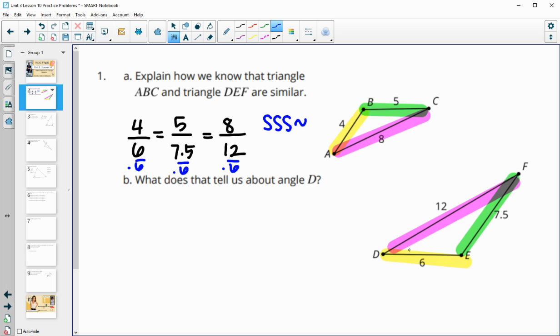And then part B asks us what we know about angle D. So once we know that these two triangles are similar, then we know that their corresponding angles are congruent. So if we look at angle D here, we know that angle D is going to be equal to angle A. So we know angle D is going to be congruent to or equal in measure to angle A.